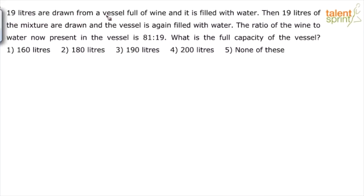19 liters are drawn from a vessel full of wine and it is filled with water. Then 19 liters of the mixture are drawn and the vessel is again filled with water. The ratio of wine to water now present in the vessel is 81 to 19. What is the full capacity of the vessel? Options are 160 liters, 180 liters, 190 liters, 200 liters, or none of these.